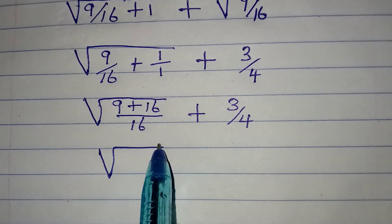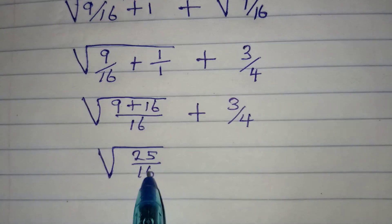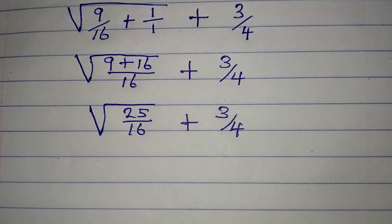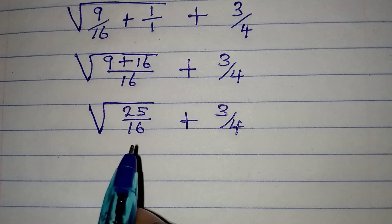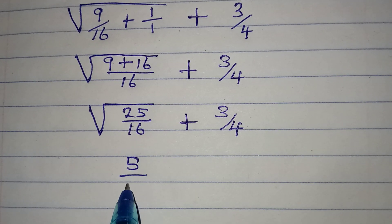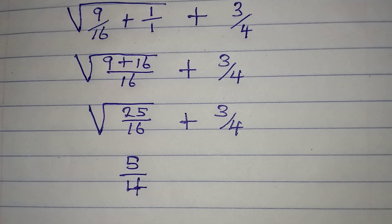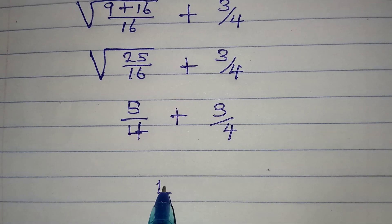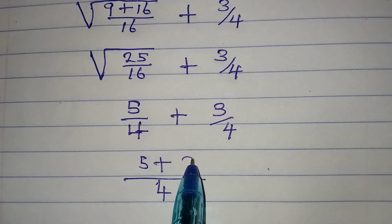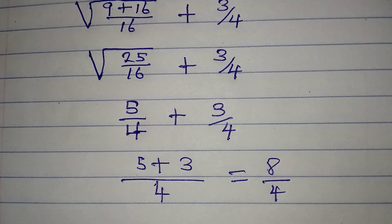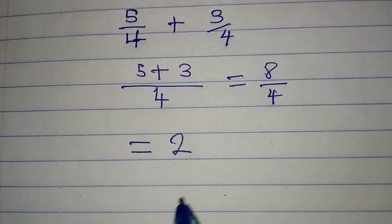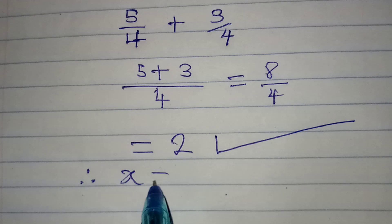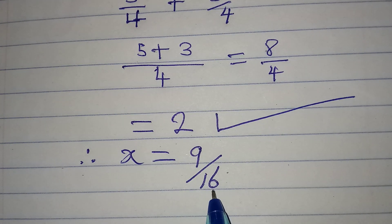9 plus 16 gives 25 over 16. Square root of 25 is 5 and square root of 16 is 4, so the first term is 5 over 4. Adding 3 over 4: the LCM is 4, so 5 plus 3 equals 8 over 4, and 8 over 4 equals 2. This matches the right-hand side, so x equals 9 over 16 is correct. Thank you for watching.